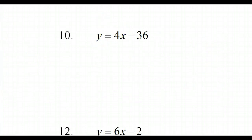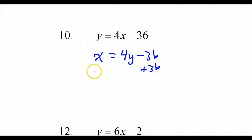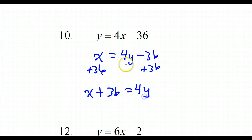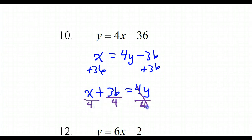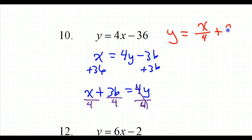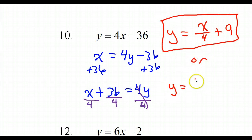Number 10: switch x and y and solve for y — giving x equals 4y minus 36. Add 36 to both sides: x plus 36 equals 4y. Divide both sides by 4 — all three terms get divided — the 4's cancel out, and the final answer is y equals x over 4 plus 9. I could also write it as y equals 1/4 x plus 9, which means the same thing.